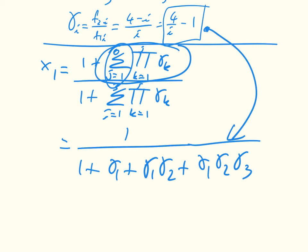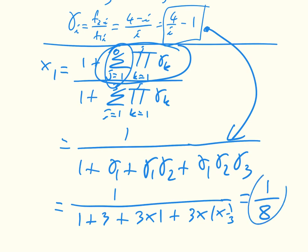And now I just take this thing here and put it into that expression, which is equal to 1 divided by 1 plus 3 times 1 plus 3 times 1 times 1 third, which after a tiny bit of algebra is equal to 1 over 8. And so the probability that a given individual of the first type takes over a population when there's a total number of 4 is 1 over 8.